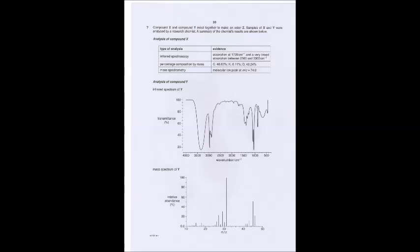Now, quite quickly, onto a question. I find the best way to do this is actually just practicing it. So, compound X and compound Y react together to make an ester Z. Now, if you don't know what an ester is, that doesn't matter too much. There's only one mark on this question. It's more about the rest of the stuff beforehand. Samples of X and Y were analyzed by a research chemist. A summary of the chemist's results are shown below. Just a comment, an ester is made between a carboxylic acid and alcohol. So we'd expect X and Y to be, one of them to be a carboxylic acid, one to be an alcohol. So, firstly, we'll do analysis of compound X. This is the stuff we have.